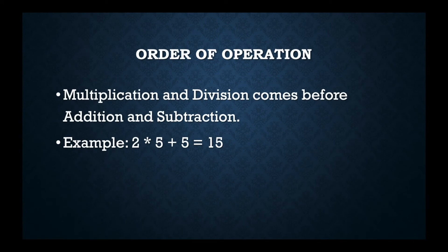Order of operation: multiplication and division comes before addition and subtraction. So first you have to multiply and then we add. 2 multiplied by 5 is equal to 10, and then 10 plus 5 is equal to 15. So the answer is 15.